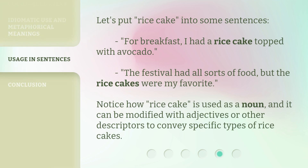Let's put 'rice cake' into some sentences. For breakfast, I had a rice cake topped with avocado. The festival had all sorts of food, but the rice cakes were my favorite. Notice how 'rice cake' is used as a noun, and it can be modified with adjectives or other descriptors to convey specific types of rice cakes.